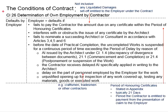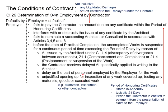In the previous videos, we talked about Clause 26. It is about the determination of own employment by the contractor. This happens when the employer is in default, meaning the employer does not carry out his obligations under the contract. As the employer fails to carry out his obligations, this may lead to trouble or problems for the contractor in carrying out his duty.